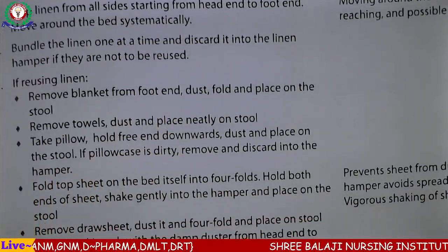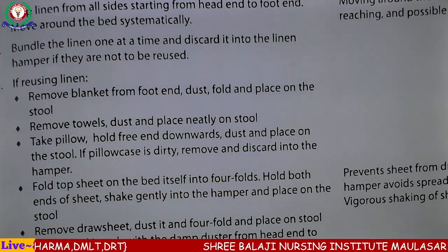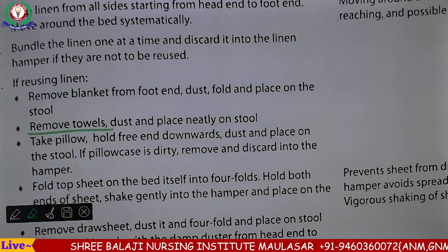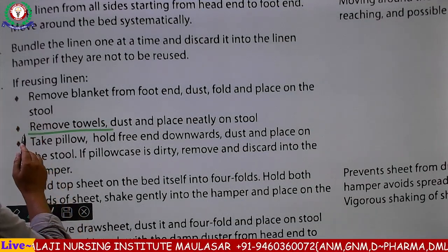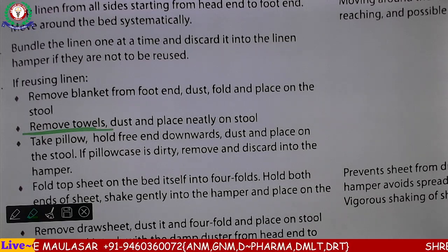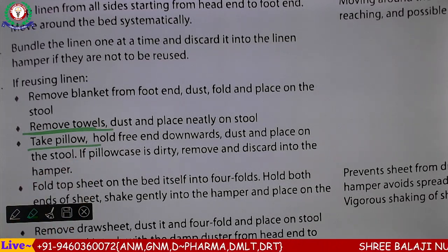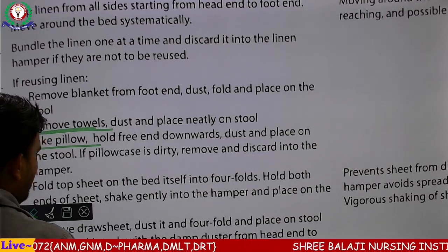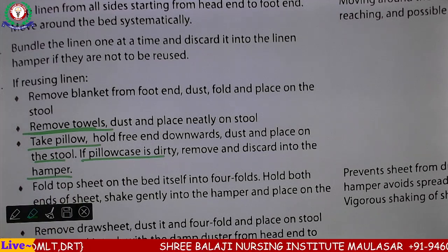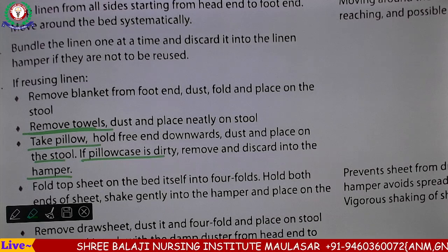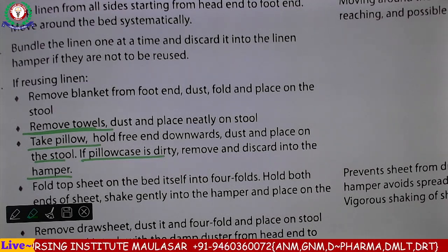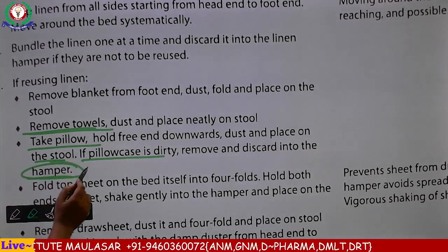Removing linen: remove blanket from foot end, dust, fold and place on the stool — blanket को हटाएंगे और stool पे रख देंगे। Remove towels, dust and place neatly on stool — तोलिया हटाएं, धूल हटाएं और stool पे साफ-सुथरे ढंग से रखें। Take pillow, hold firmly and downward dust, place on the stool — और pillow case if dirty, remove and discard into the hamper — गंदे pillow cover को हटाएं और hamper की टोकरी में डाल दें।